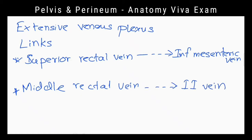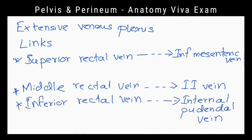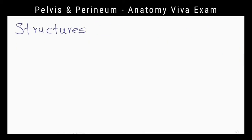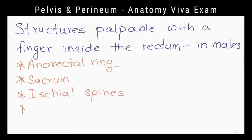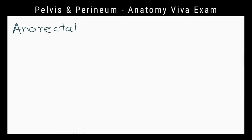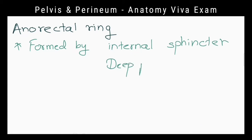What are the structures palpable with the finger inside the rectum in male? Anorectal ring, sacrum, ischial spines, prostate gland, coccyx, and ischioanal fossa. What is anorectal ring? It is a distinct ring formed by internal sphincter, deep part of external sphincter, and puborectalis muscle at the junction of rectum and anal canal.